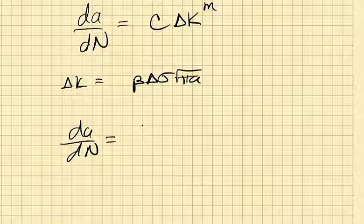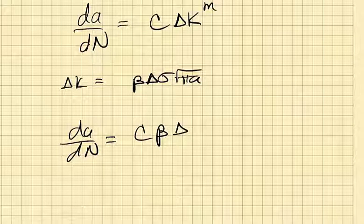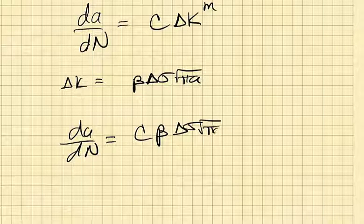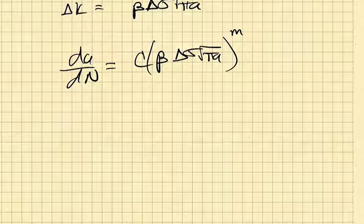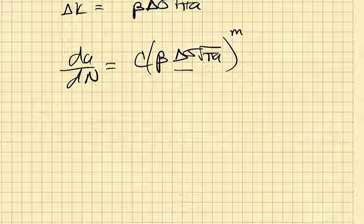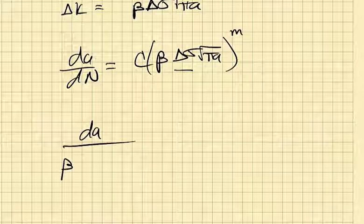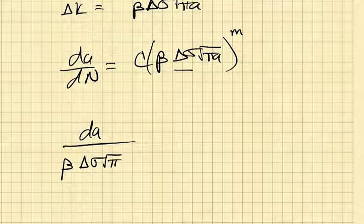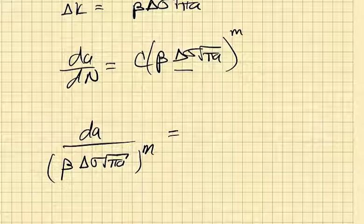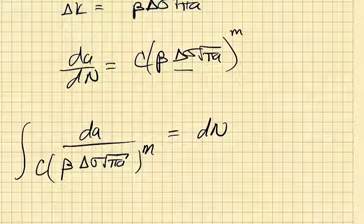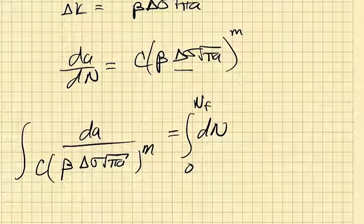And so dA, dN is going to be equal to C beta delta sigma root pi A, all of that stuff raised to the M power. Now, I know what my stress range is. So I'm going to have to take the delta K to the other side of the equation over here. And I'm going to have this C over here as well. I'm going to have dN and I'm going to integrate this from zero to the number of cycles to failure.